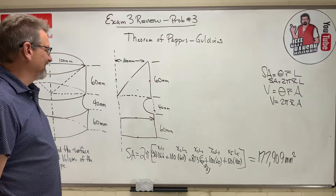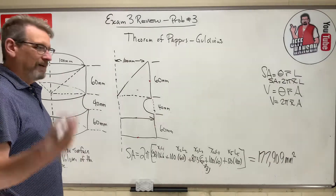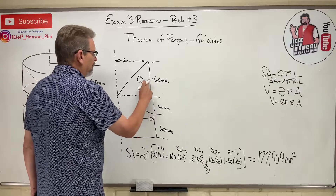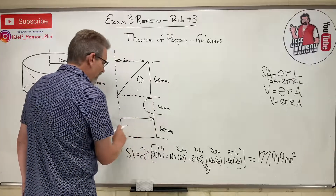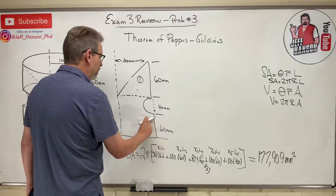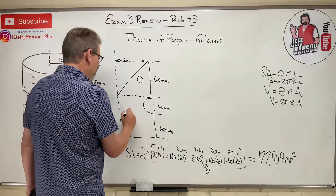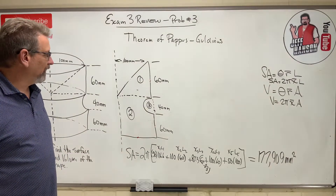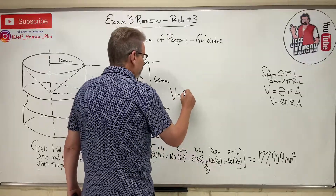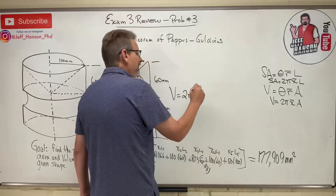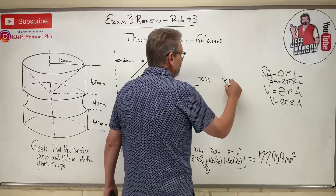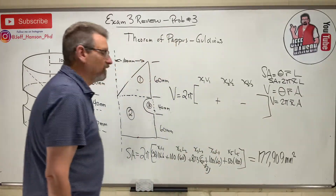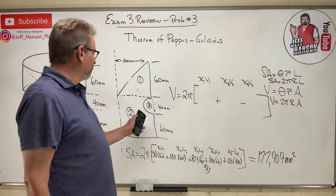How many areas would you say this is? I'd say three. Area one is the triangle. Area two is the big rectangle. Area three is a half-circle that we subtract off. Volume = 2π × (x̄₁A₁ + x̄₂A₂ − x̄₃A₃). Shape one and two are positive; the half-circle is subtracted.